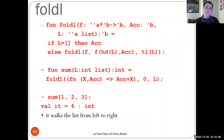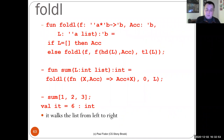So these are two examples of higher-order functions: one iterates from end to beginning, the other from beginning to end.